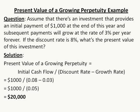So we want to solve for the present value of a growing perpetuity, and that is equal to the initial cash flow divided by the discount rate minus the growth rate. The initial cash flow is $1,000. The discount rate is 8%, which is 0.08 in decimal notation. The growth rate is given as 3%, and that is 0.03 in decimal notation.